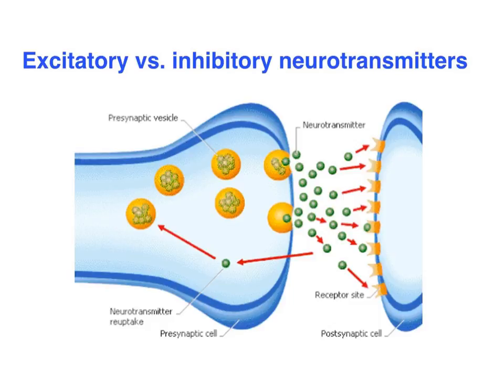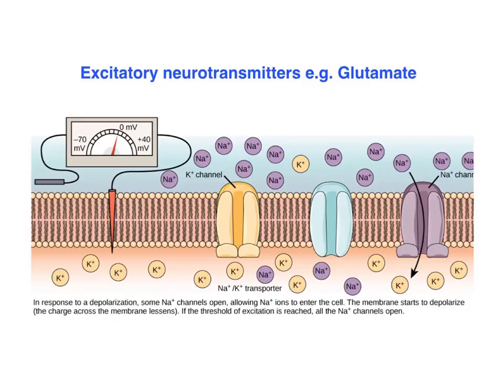And that's going to have one of two effects, either an excitatory or an inhibitory effect, which is the purpose of this video. So let's zoom in and have a look at excitatory neurotransmitters such as glutamate. So here we've got the cell membrane.